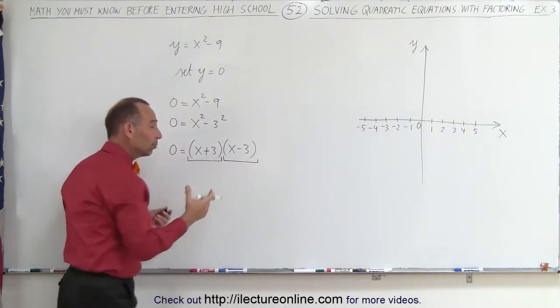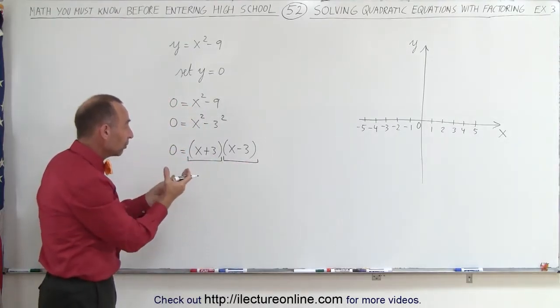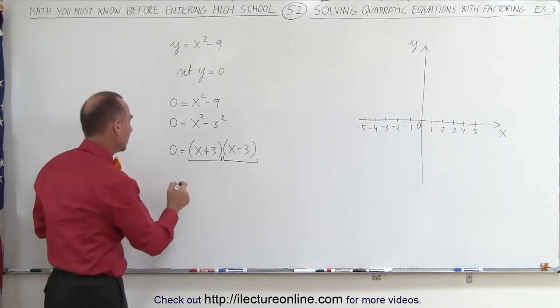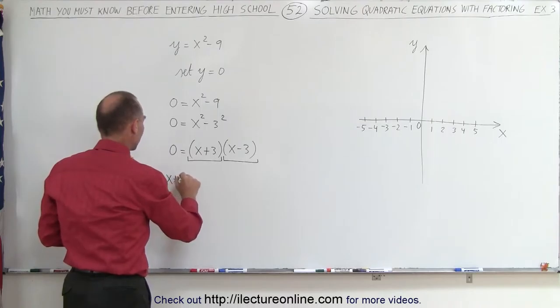And when you factor the difference of squares, it's done as follows: 0 equals the quantity x plus 3 times the quantity x minus 3.